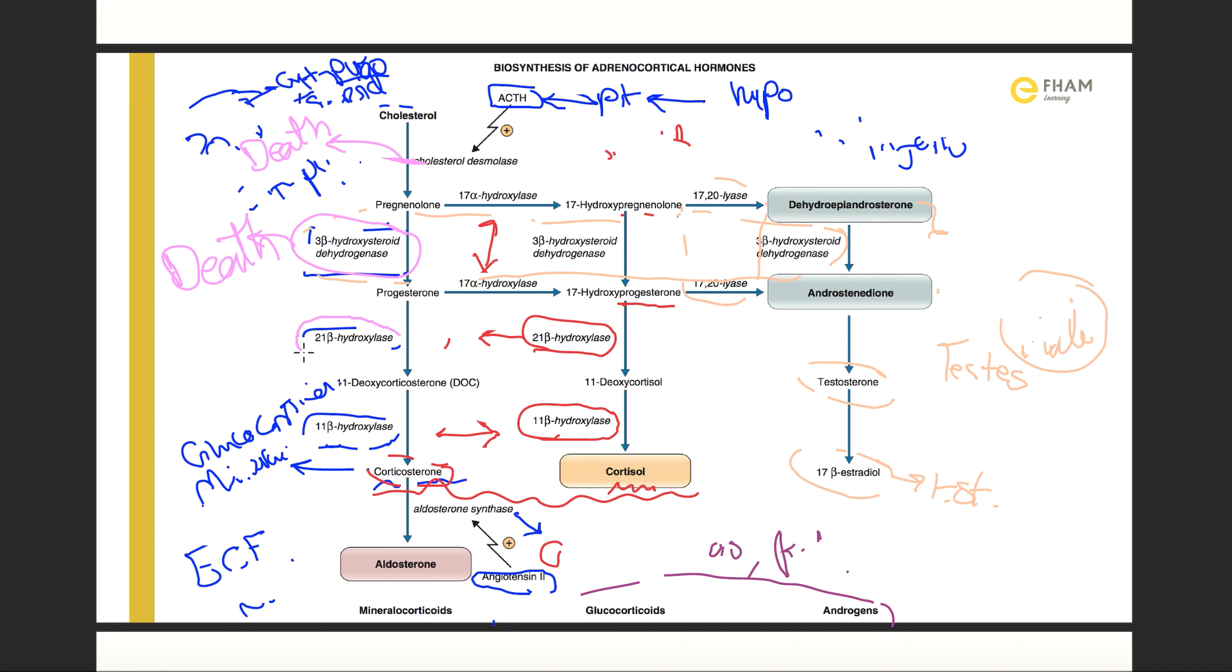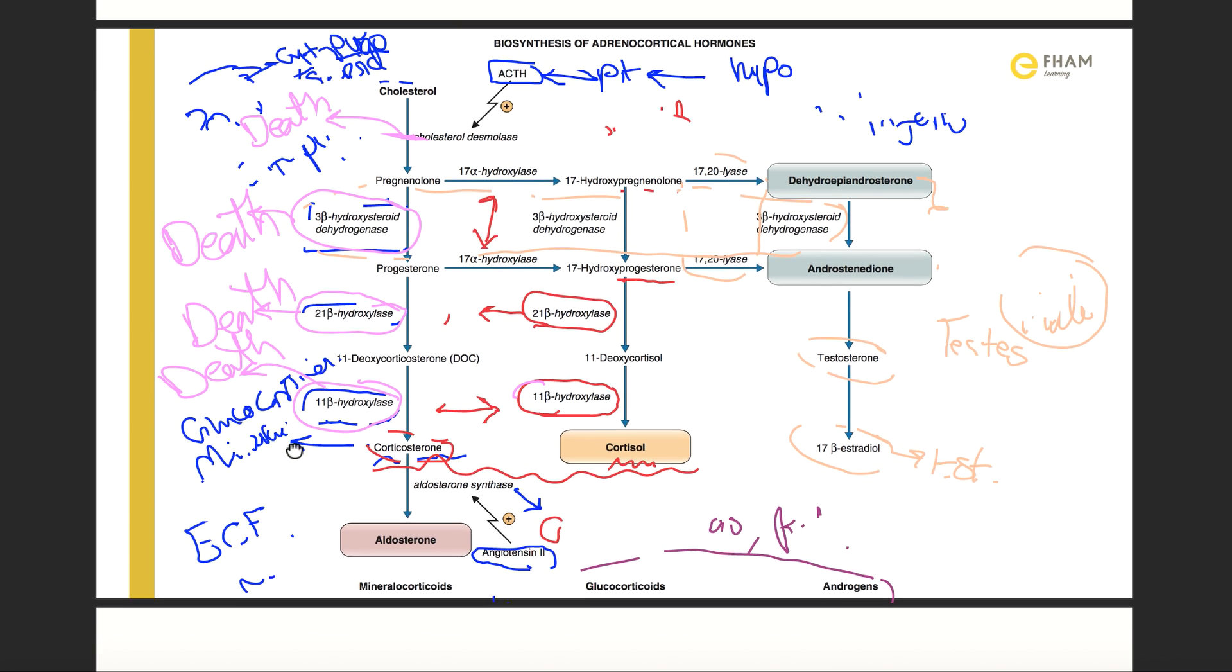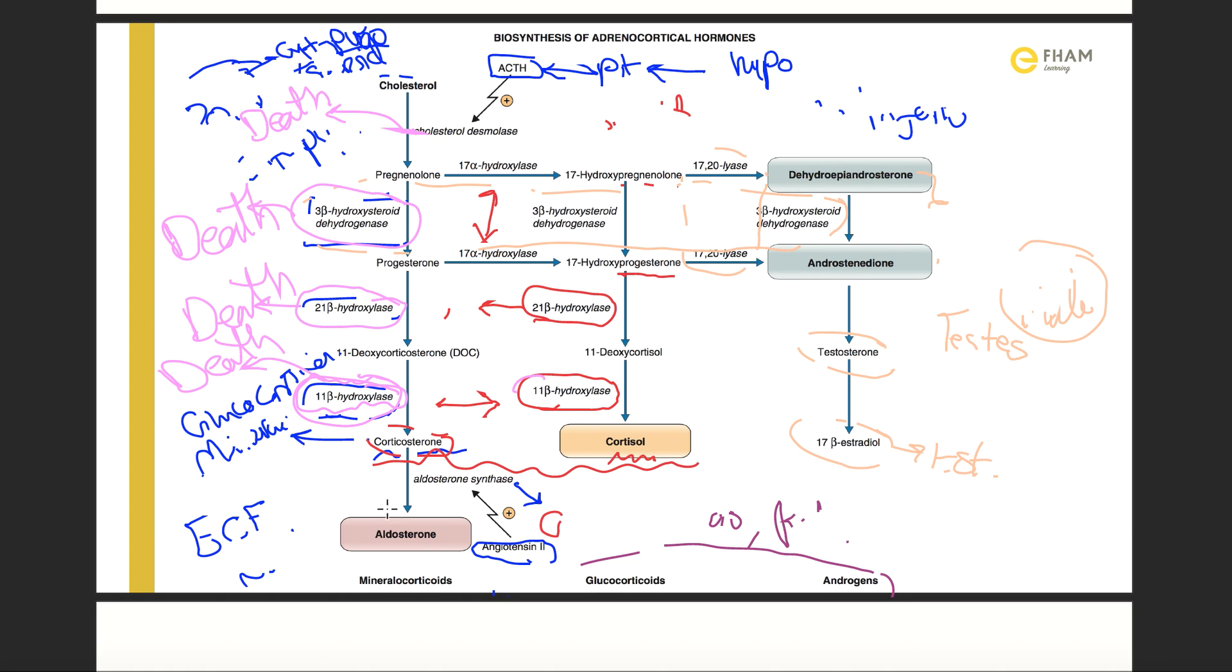Of course we mean all these steps. 21-beta-hydroxylase is the same, 3-beta-hydroxysteroid dehydrogenase is the same here also. And also here, if there is a blockage, it will result in death. There is a pharmacological drug which blocks this step to block the aldosterone synthesis. It is used in case of hyperaldosteronism. It blocks 11-beta-hydroxylase.